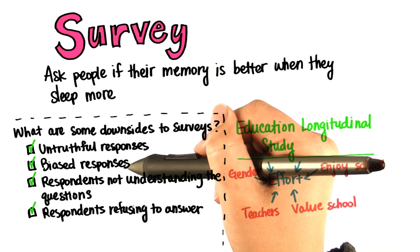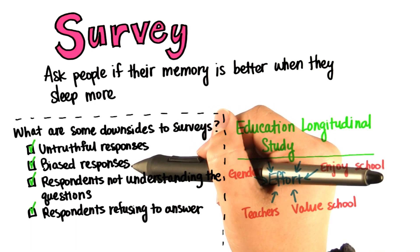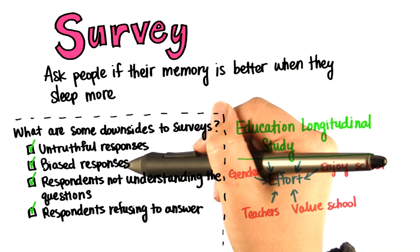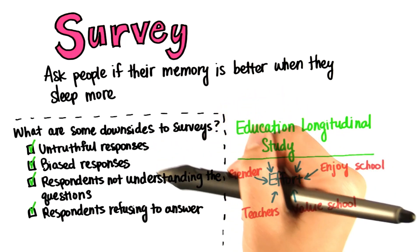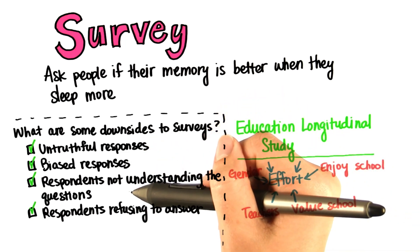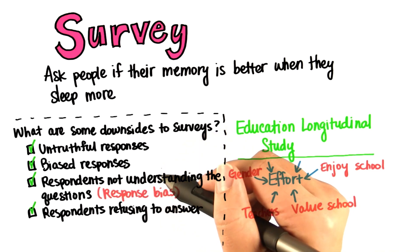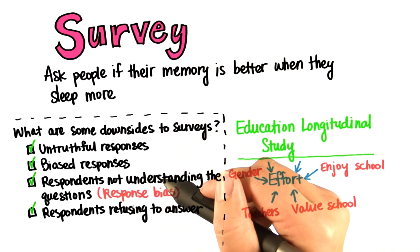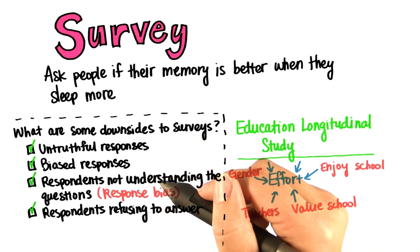Everyone has their own bias based on where they grew up, the experiences that they went through, their beliefs and values. When respondents don't understand the questions, we get what's called response bias. That's why it's very important for those who write the survey to be very precise in their wording.